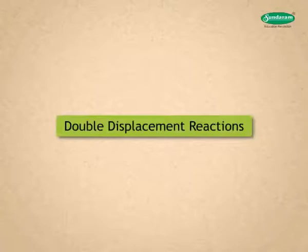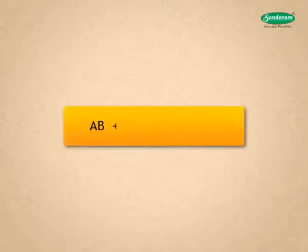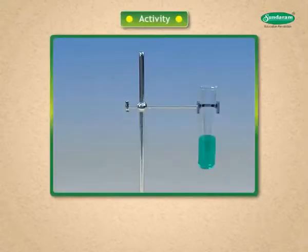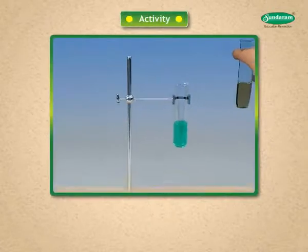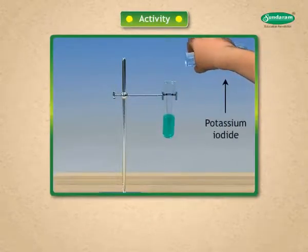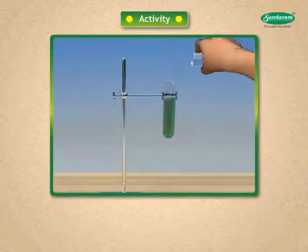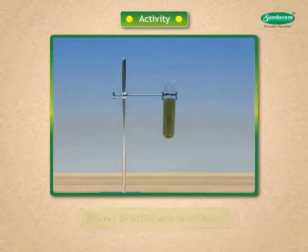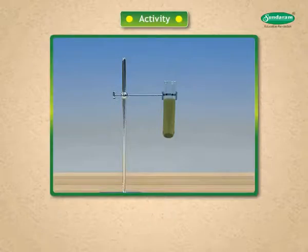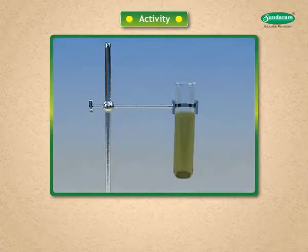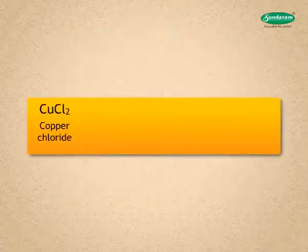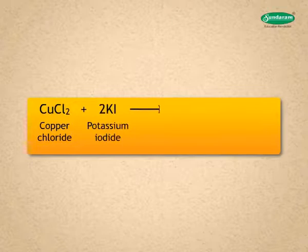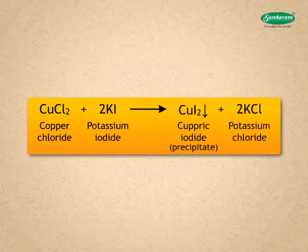Now let us take a look at double displacement reactions, where AB + CD → AC + BD. Take 5 mL of copper chloride solution in a test tube. Add 5 mL of potassium iodide to it. Note your observation — a brown precipitate is formed. This is cupric iodide. A brown substance insoluble in water is formed. This insoluble substance is known as a precipitate. CuCl₂ + 2KI → CuI₂(precipitate) + 2KCl.